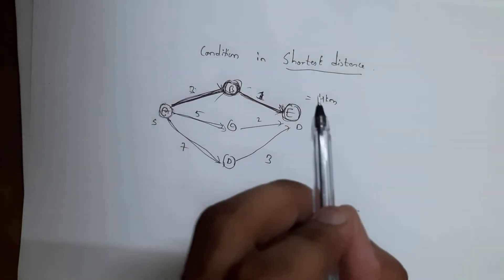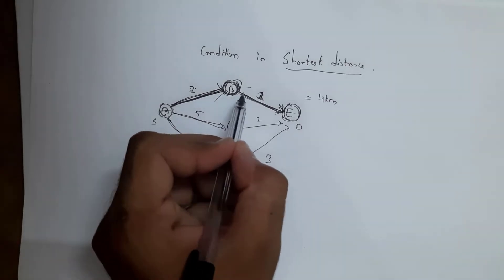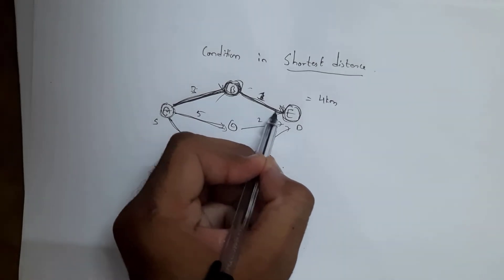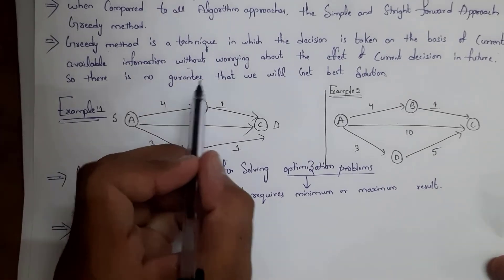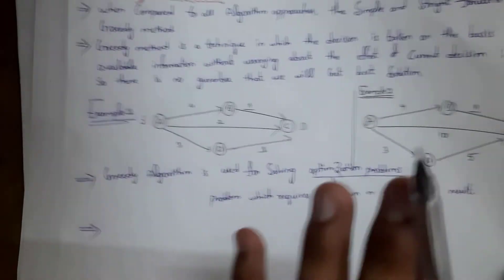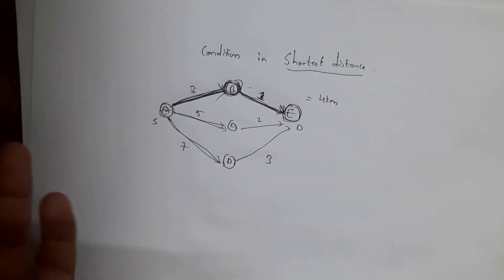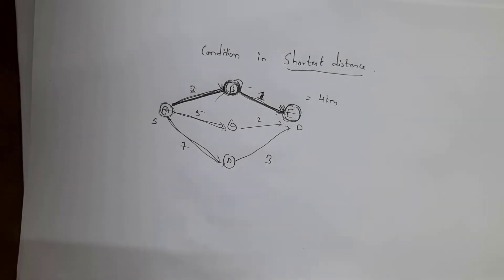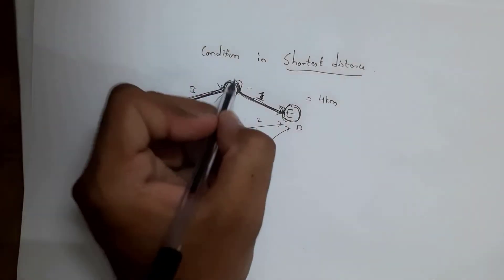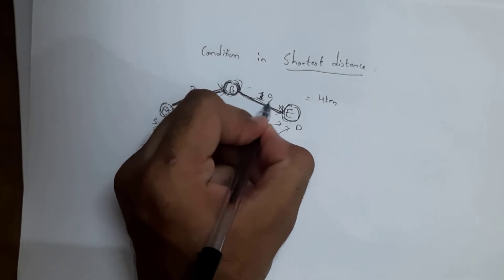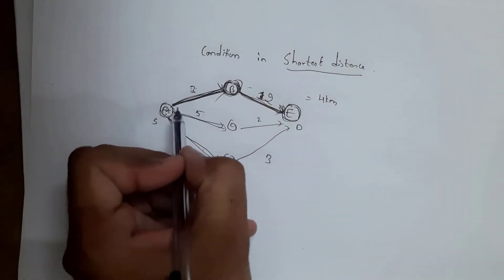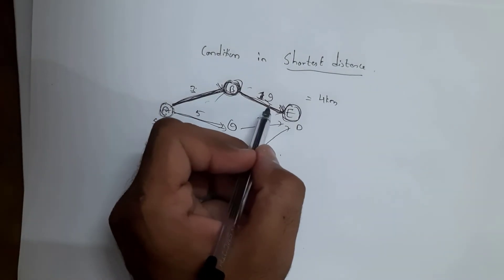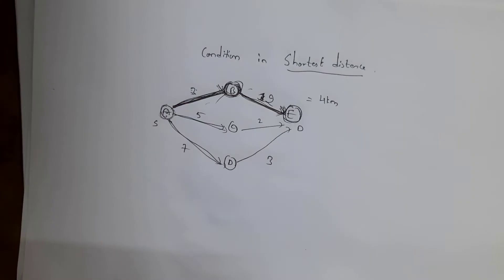For example, I took the 3 kilometer route — this is the current decision. It also affects our future decision, that is from B to E. There is no guarantee to get the best result because we take a decision based on current available information. For example, if from B to E the distance were 12 kilometers, it would become the worst result because we only looked at current information. Future information may be worse, so the result is not always best in greedy method.